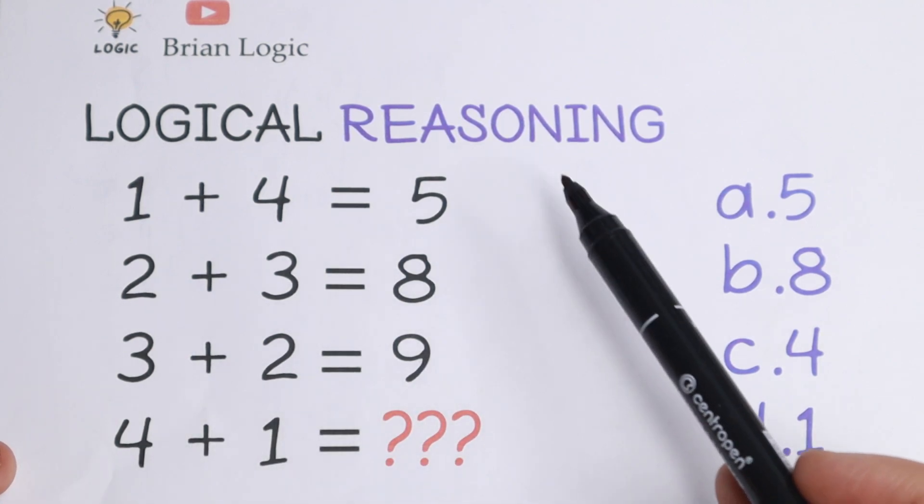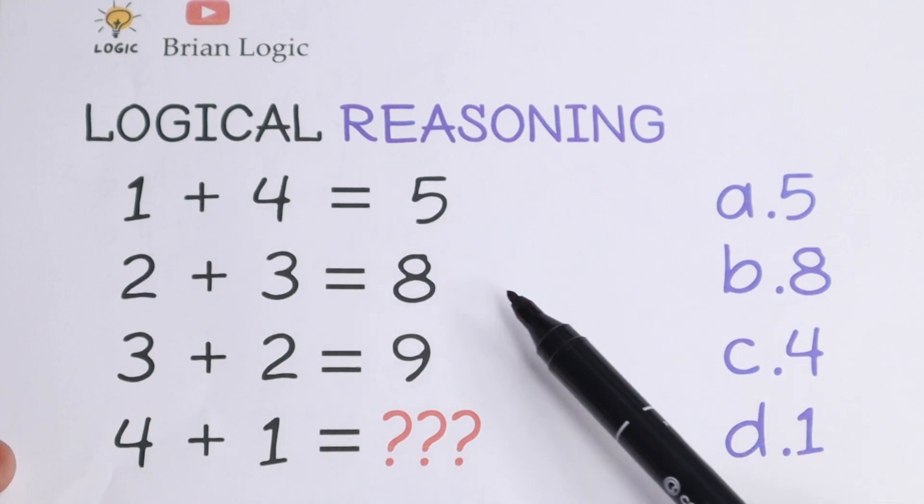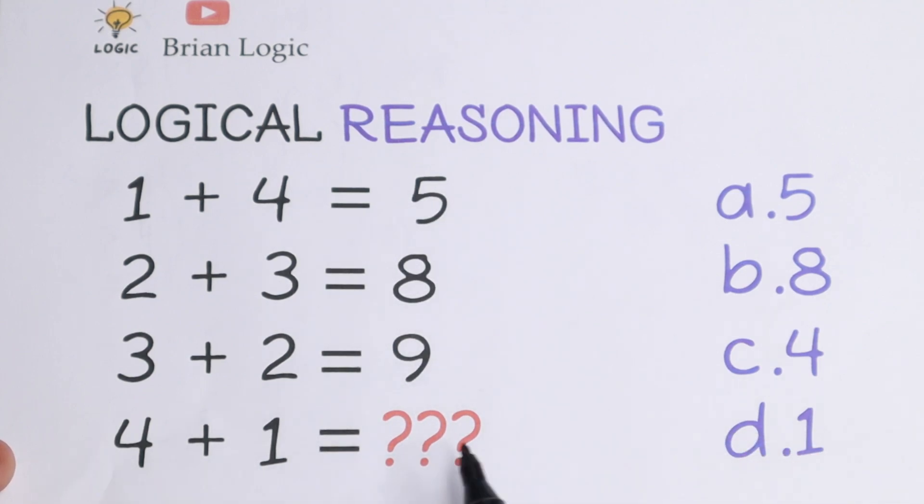We have a lot of rows. We have 1 plus 4 equal to 5, 2 plus 3 equal to 8, 3 plus 2 equal to 9 and we need to find the last one. On the right hand side we have a lot of options: 5, 8, 4 and 1.